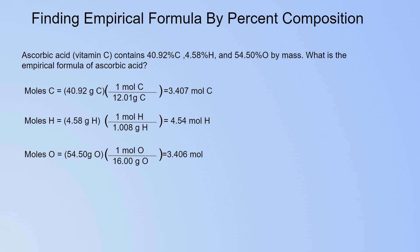The next thing you have to do is convert these grams to moles so that you can compare them to find your empirical formula. You do this by using the molar mass. So 40.92 grams of carbon divided by its molar mass of 12.01 grams per mole equals 3.407 moles of carbon. You repeat this process — dividing the grams by the molar mass — for carbon, hydrogen, and oxygen.